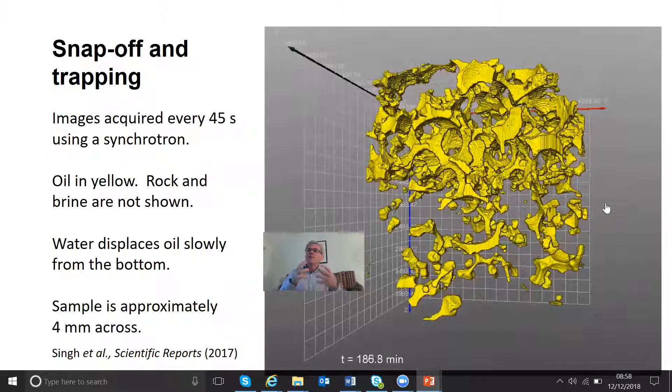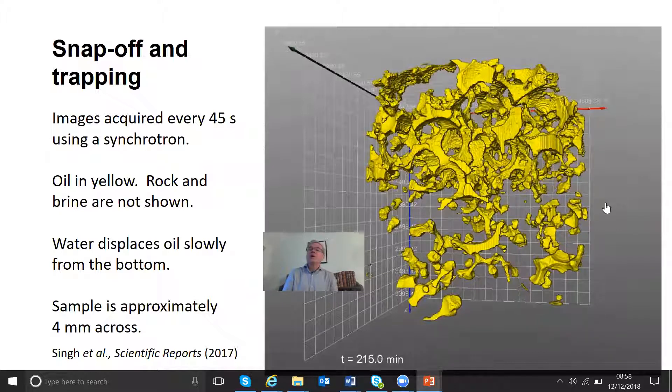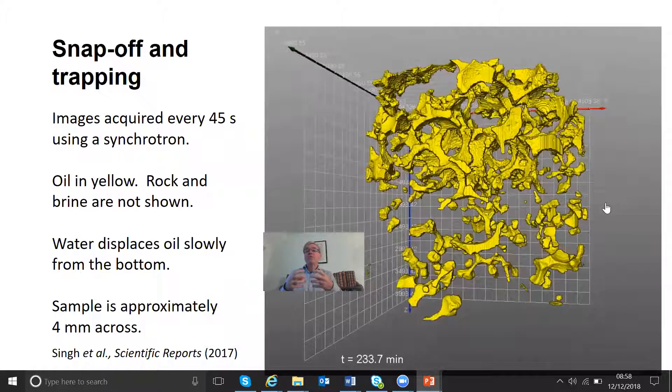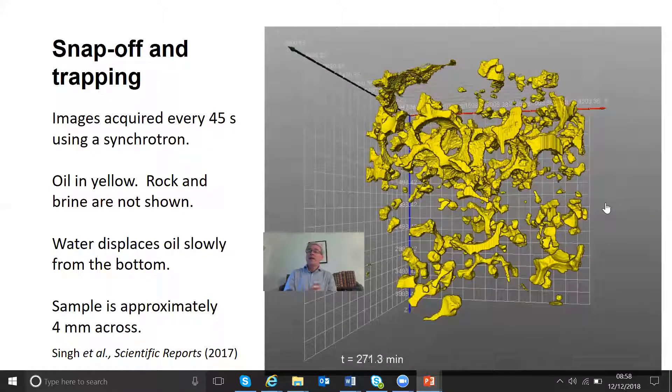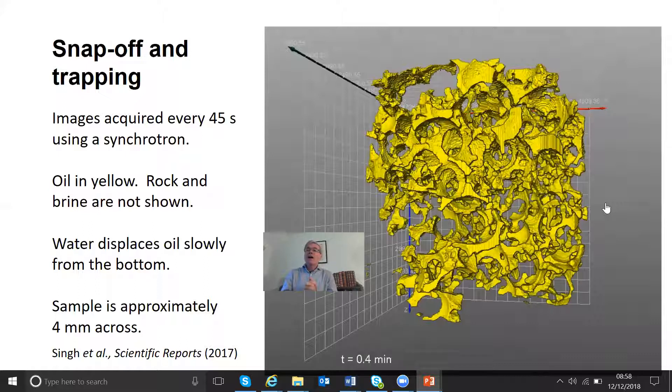What's going on? Water's going in the nooks and crannies of the pore space. The oil here, yellow, is getting trapped. It's getting surrounded by water and then isn't moving. The total system size here is about four millimeters.